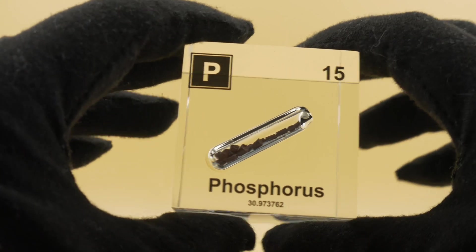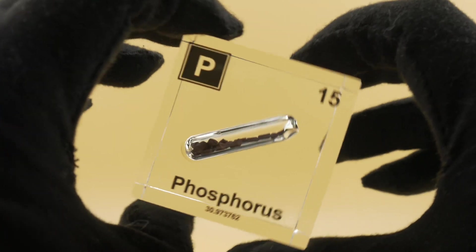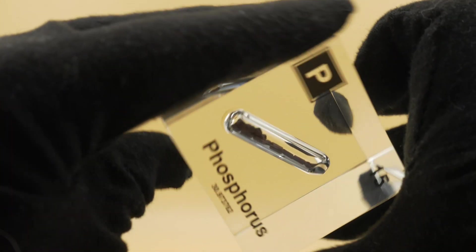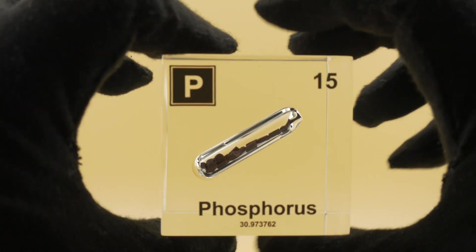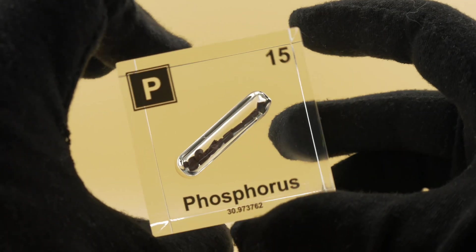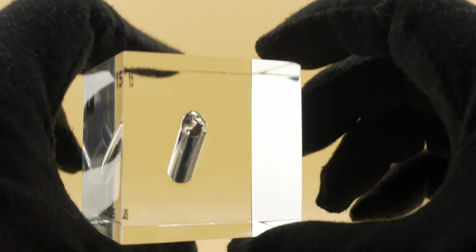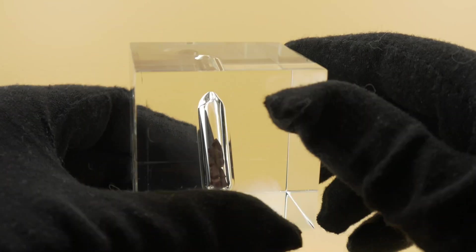Over the centuries, phosphorus transitioned from a chemical curiosity to a cornerstone of modern chemistry. The 18th and 19th centuries saw an advancement in understanding its chemical behavior. And by the 20th century, phosphorus had became a vital component in fertilizers, industrial chemicals and even munitions.